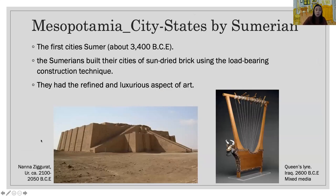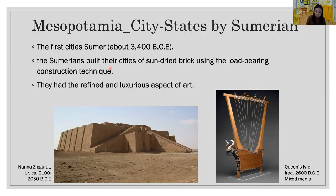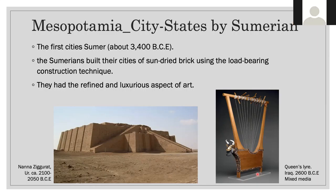The first city of Mesopotamia arose in the southern area, a region called Sumer, about 3,400 BCE. The Sumerians were the first people to leave behind not just artifacts but also words. Lacking stone, the Sumerians built their cities of sun-dried brick using load-bearing construction techniques. They also had a refined and luxurious aspect of art — can you guess what this artifact is? It is an ancient harp.